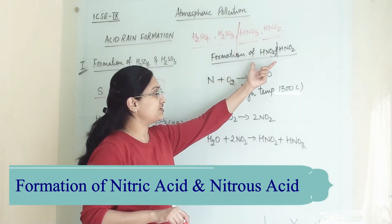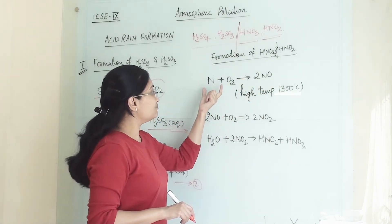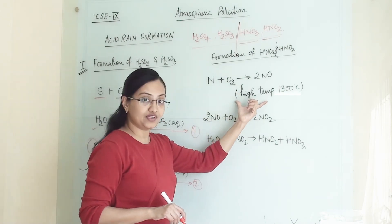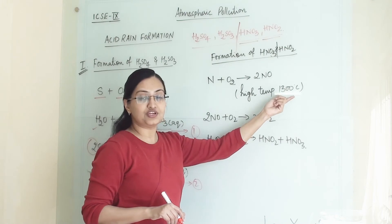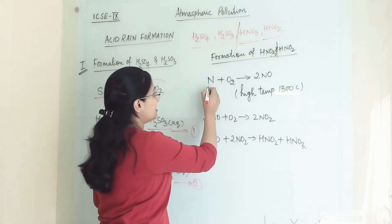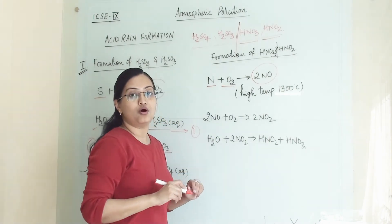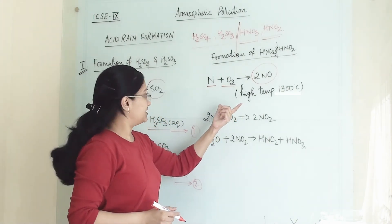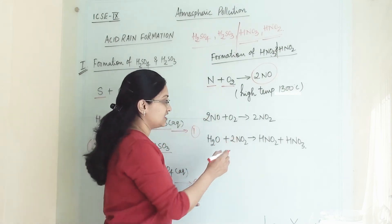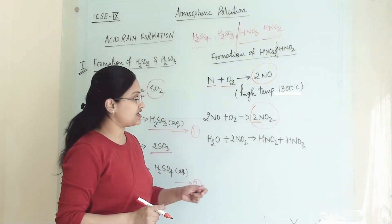In the next step, for the formation of nitric acid and nitrous acid, we study three reactions. When nitrogen reacts with oxygen at high temperature — around 1300 degrees centigrade — which is only possible during lightning discharge, it produces two molecules of nitric oxide (NO). These two molecules of nitric oxide are then further oxidized to give two molecules of nitrogen dioxide (NO₂).